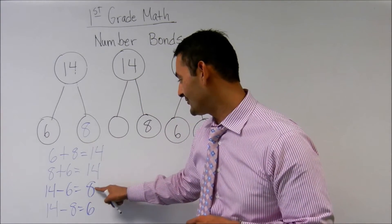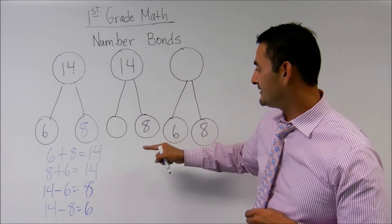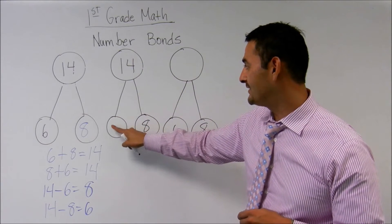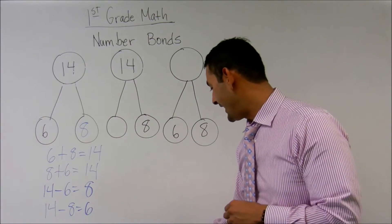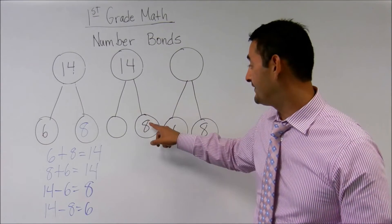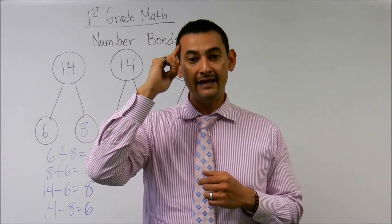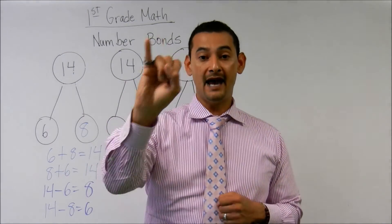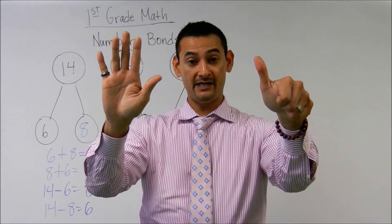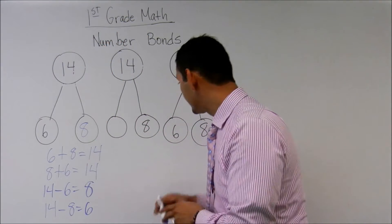So I've got 4 different number sentences and a fact family. Now let's take a look at this number bond here. We have 14, we have an 8, and we have something we need to figure out. Let's use the counting up method — put 8 in our head and count up to 14: 8, 9, 10, 11, 12, 13, 14. How many do I have? 1, 2, 3, 4, 5, 6.